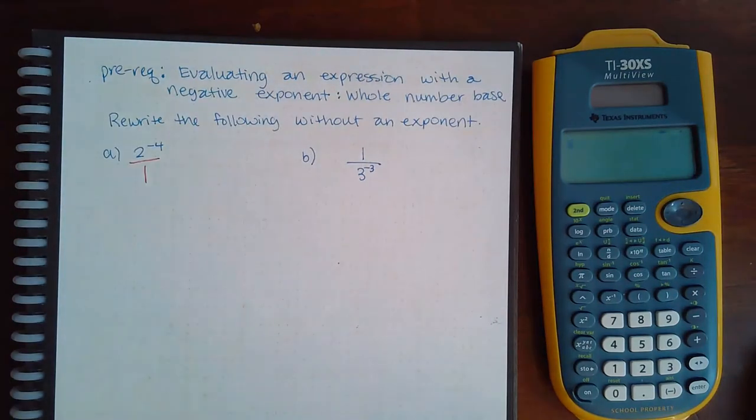What a negative exponent does is, in order to turn it positive, it will take the base and move it to the opposite location. So if I have two to the negative four in the numerator, what it's going to do is move it down to the denominator.